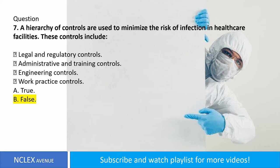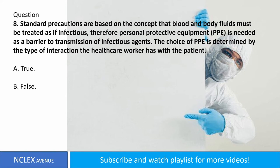Question number eight. Standard precautions are based on the concept that blood and body fluids must be treated as if infectious; therefore personal protective equipment (PPE) is needed as a barrier to transmission of infectious agents. The choice of PPE is determined by the type of interaction the healthcare worker has with the patient. A. True. B. False. Answer: letter A. True.